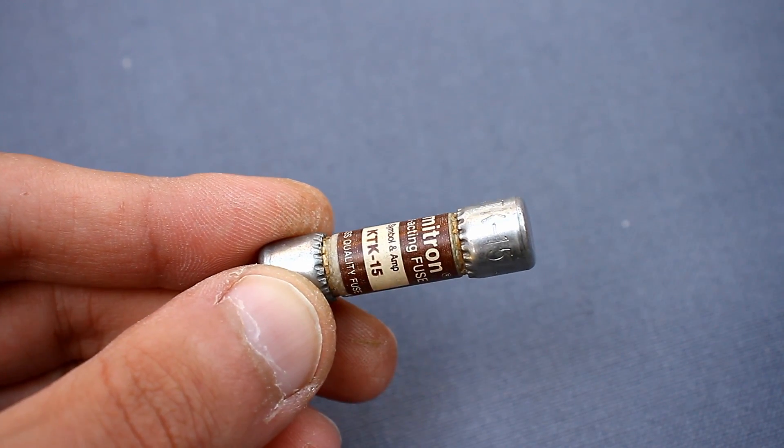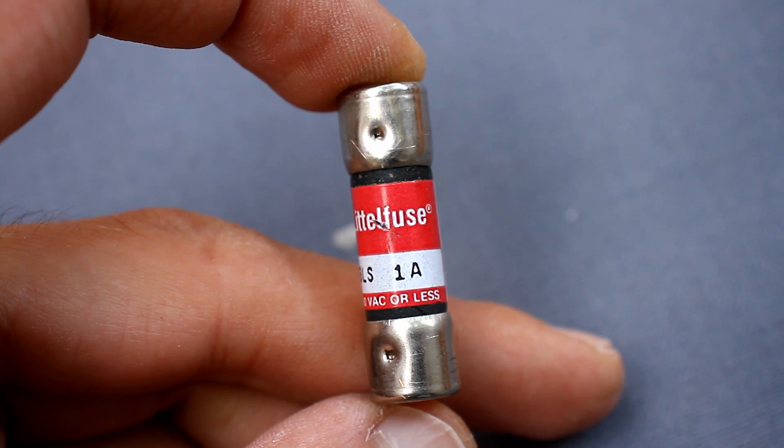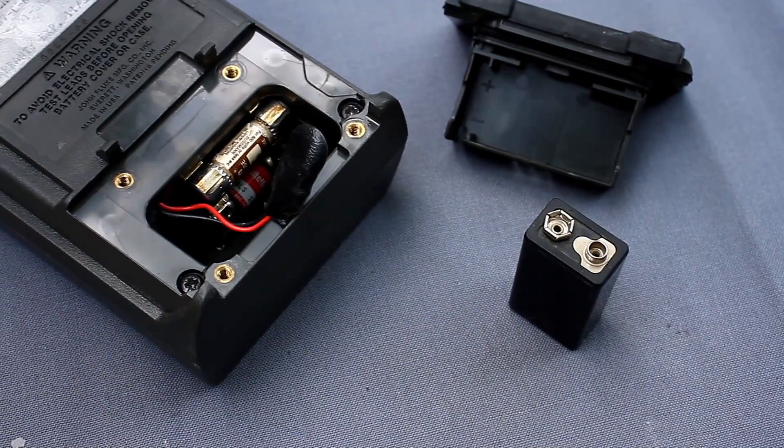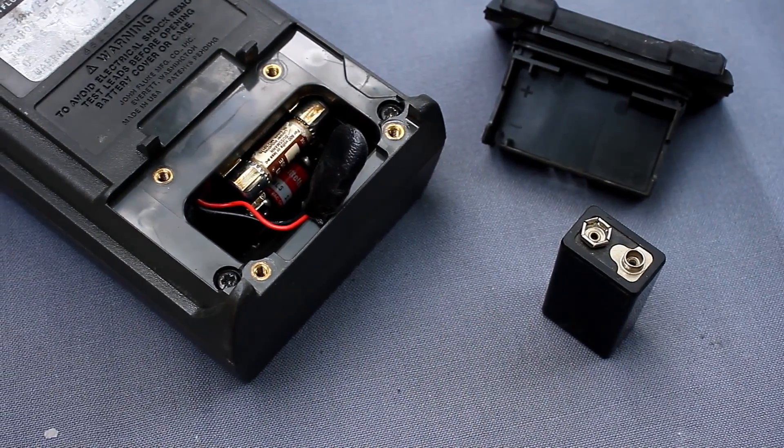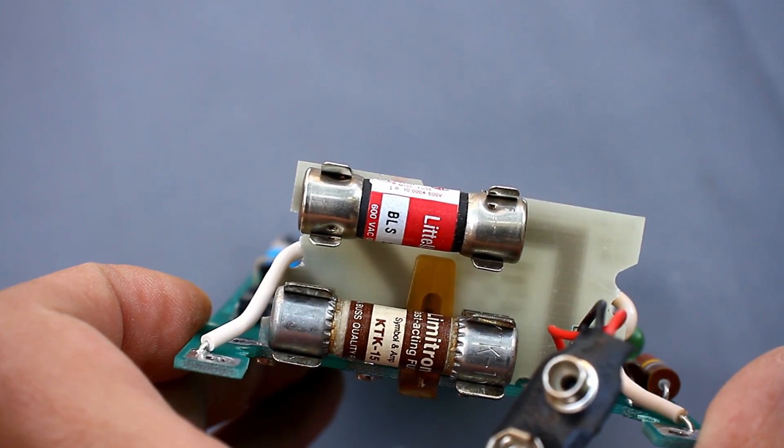These are quick break and safe fuses that cost a lot of money. One fuse is 15A, the other 1A. Apparently, these are authentic fuses that were originally in this device. Both fuses are intact.